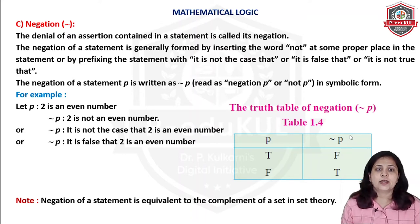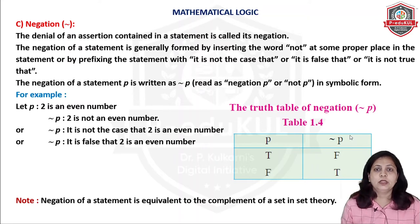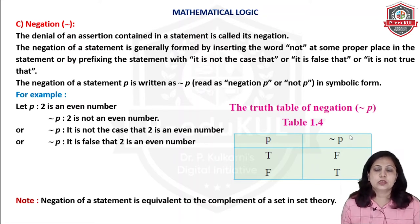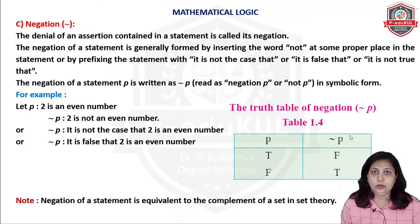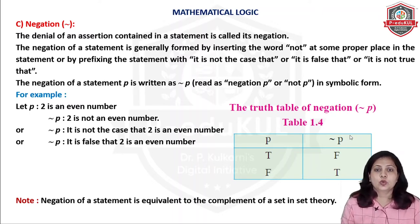The statement is: '2 is an even number.' This is true. What will be the negation of that? '2 is not an even number.' Now, some of you must be thinking that why we are not using opposite words — even ka odd, true ka false — but we are not going to do that.